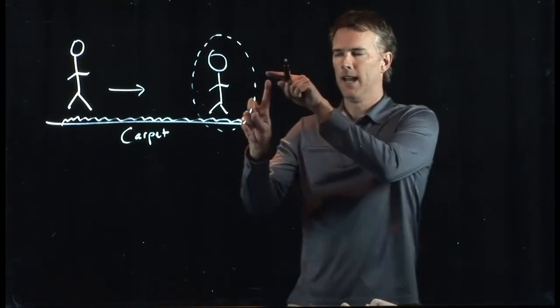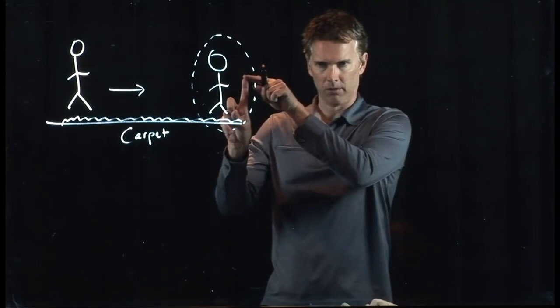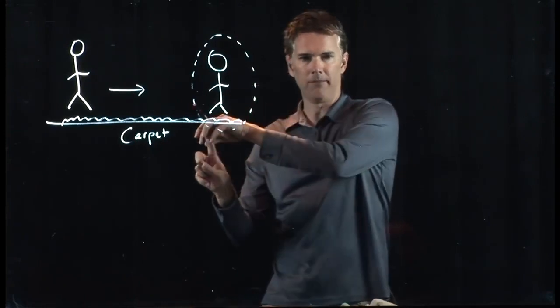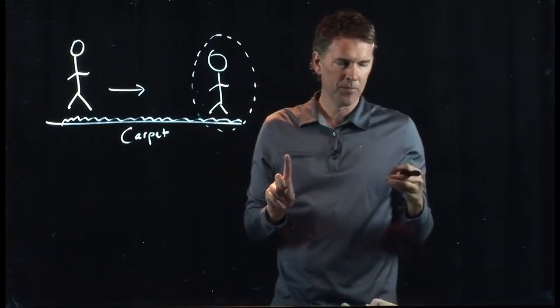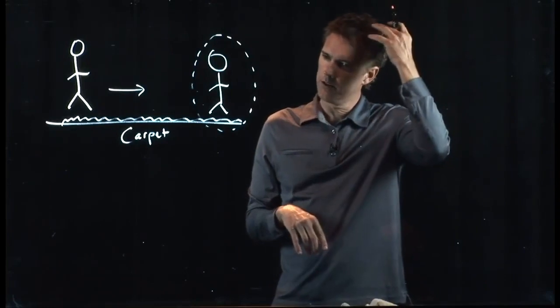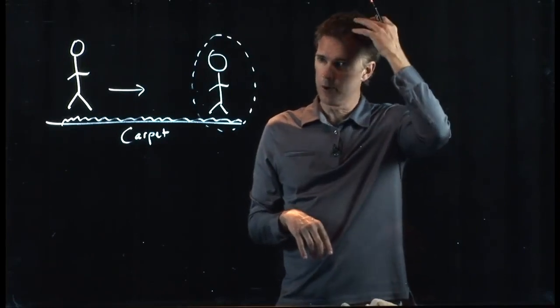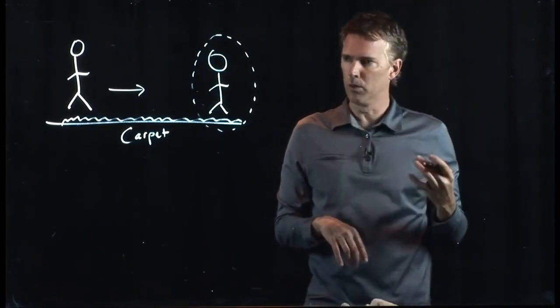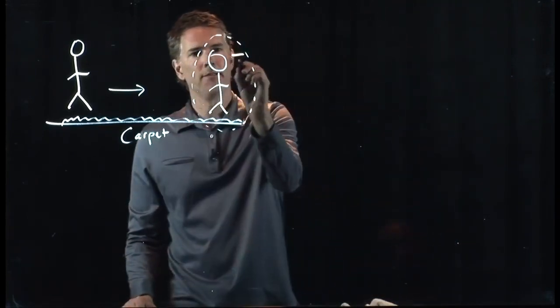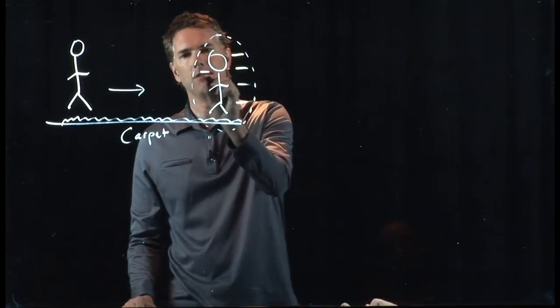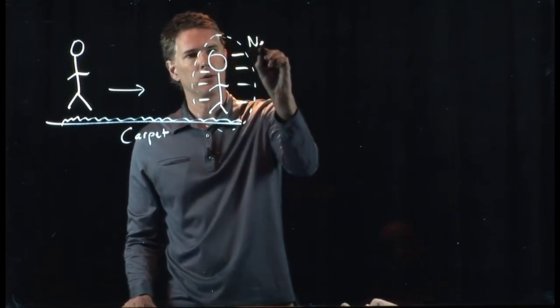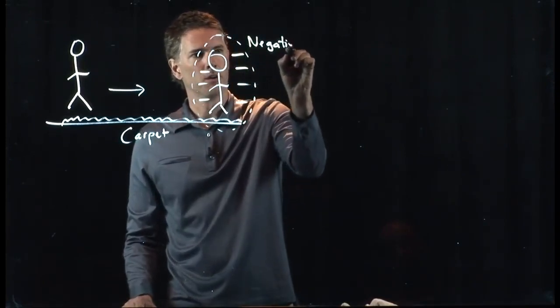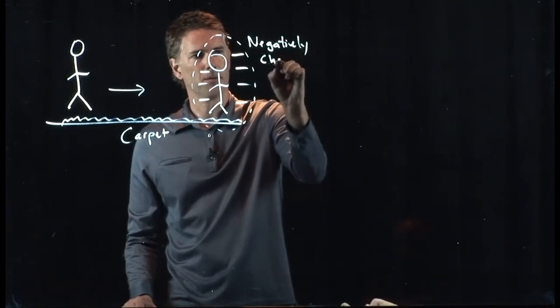Electrons are hanging out on the tips of the carpet and they jump from the carpet to your shoes, the same way that the electrons on your hair jump from your hair to the balloon when you rub the balloon on your head. You charge up the balloon with electrons. So you have a net negative charge. You are negatively charged when you walk across the carpet.